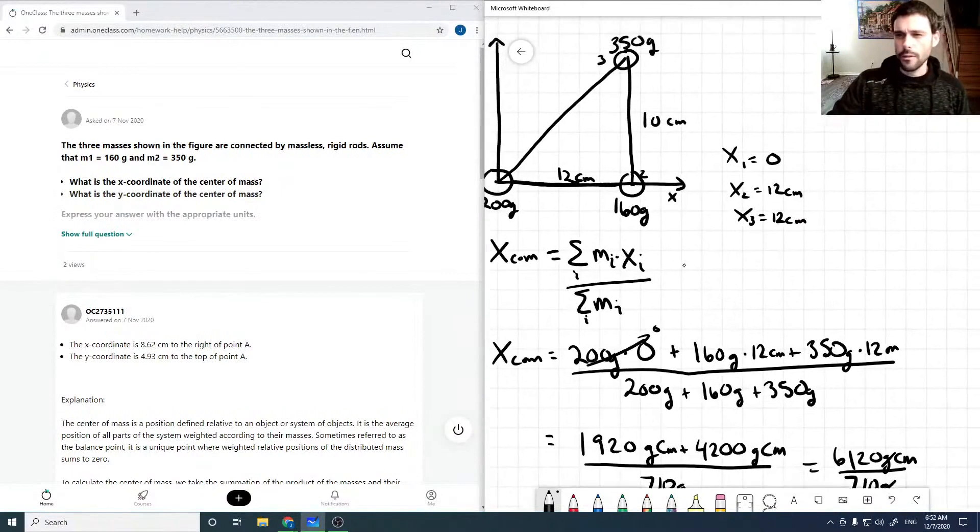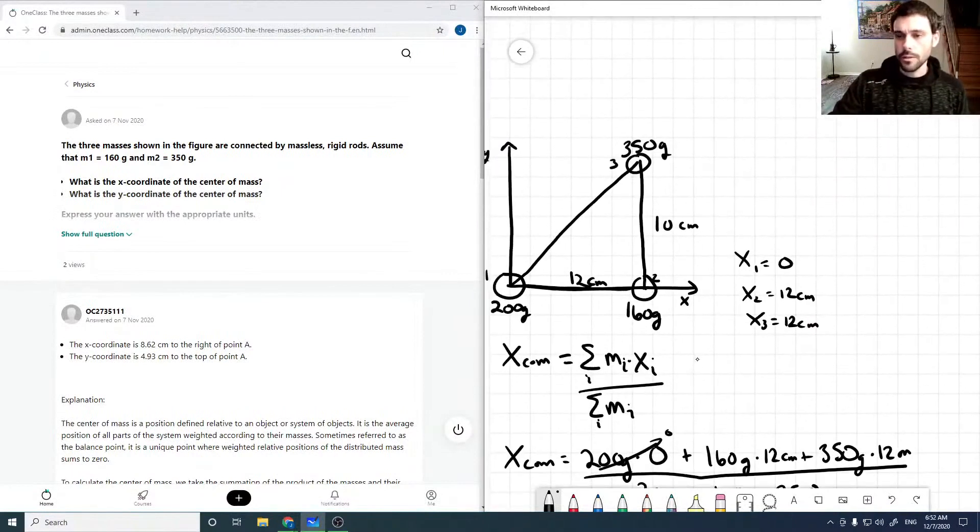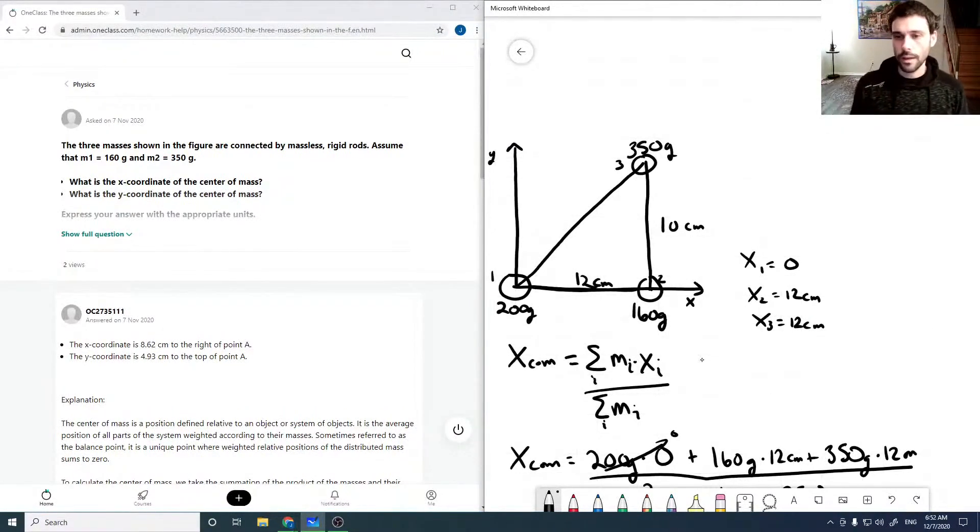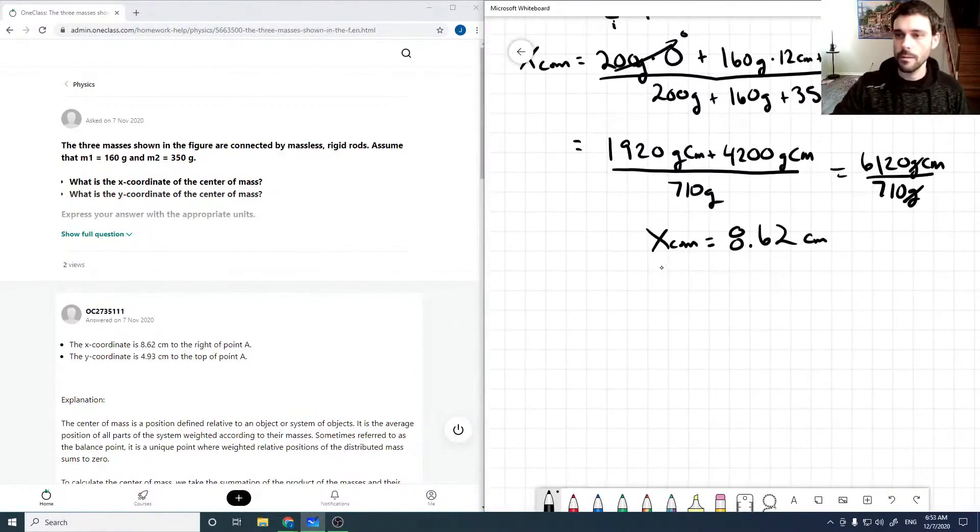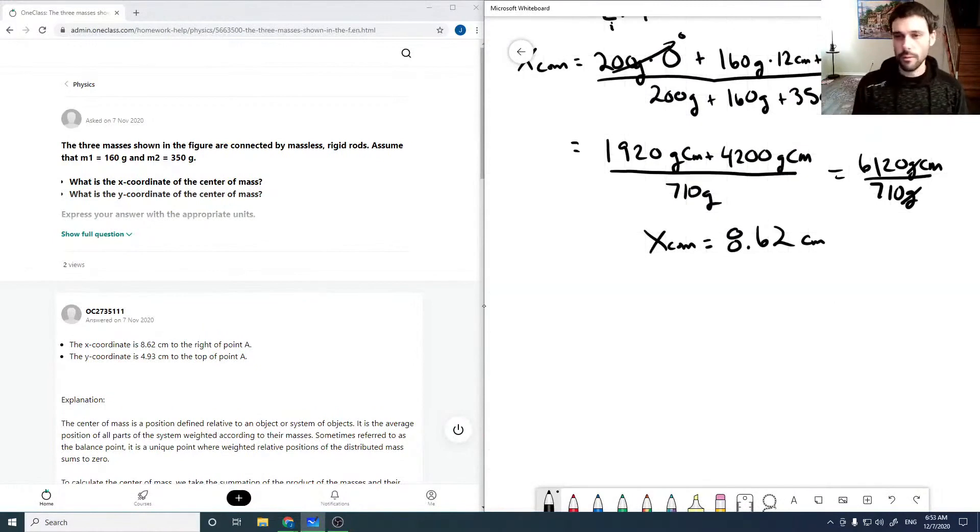And now for the y center of mass, we need our y coordinates. So again, looking at this and our axis system, we have y1 is 0, y2 is 0, and y3 is 10 centimeters.